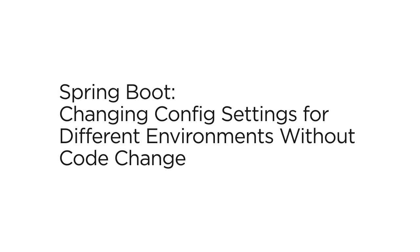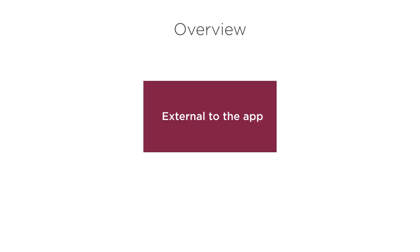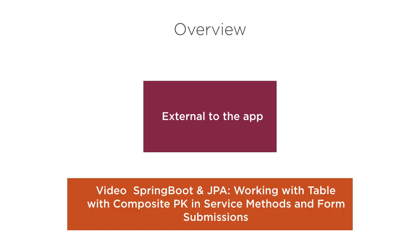When we move the Spring Boot app from one environment to another, like dev to test to prod, we need to change the database it is pointing to or the log settings. In this video we will see how to make these changes external to the app so that we do not have to modify code just for moving from one environment to another. We will use the project Spring Boot and JPA working with a table with composite PK built earlier for this demonstration. Please watch that video if you want to get up to speed.